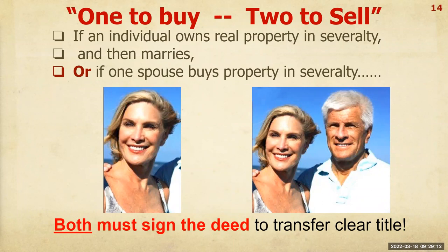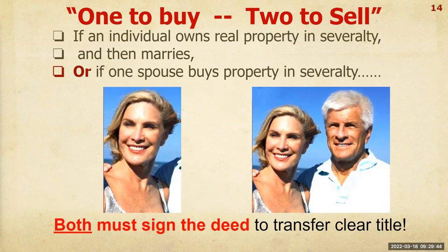The untitled spouse doesn't own the property and can't do anything with it, but you can't transfer a clear title without that spouse's signature. It doesn't matter how the titled spouse got the property — whether given, bought, or inherited. What matters is that if they own it in severalty and they're married, the untitled spouse must sign the deed. This prevents a spouse from hiding ownership of property.